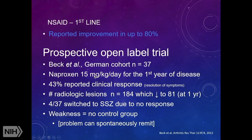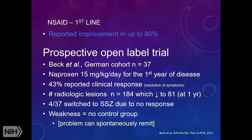There was a prospective open-label trial by Beck — a cohort of 37 patients treated with naproxen at 15 mg/kg/day for the first year of disease. 43% reported a clinical response. The number of radiologic lesions went down from 184 to 81 at one year. About 10% had to switch to sulfasalazine due to no NSAID response. The weakness of this study is there's really no control group, and we know that CNO can spontaneously remit.